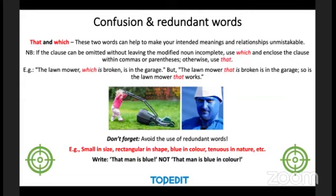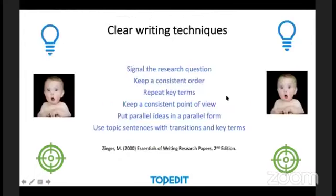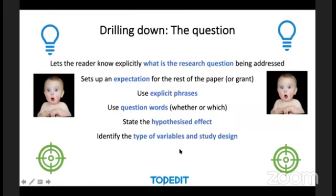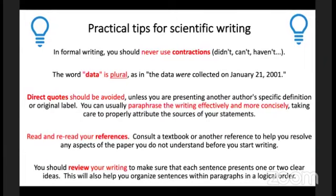Cut down redundant words and keep your readers in mind. Signal your research question, keep a consistent order, repeat key terms, keep a consistent point of view, and put parallel ideas in parallel forms. Most importantly, one topic per sentence — use topic sentences with transitions and key terms. Let your readers know exactly what your research question is, and use explicit phrases and question words like 'whether' and 'which' to state your hypothesized effect and identify your variables and study design.